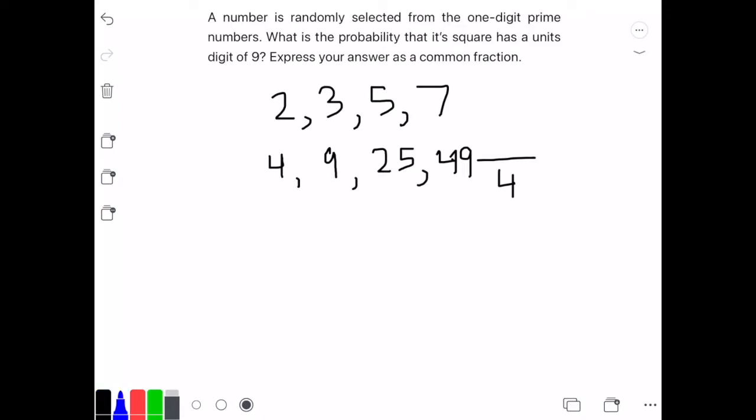Two of them have a 9 in the units digit: 9 and 49. So we have two successful outcomes. We can put 2 in the numerator of the fraction, and we get 2/4.